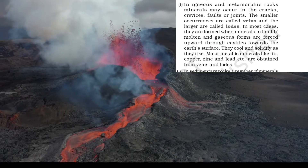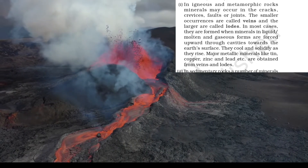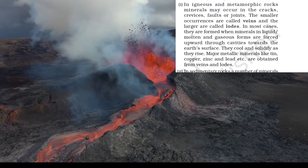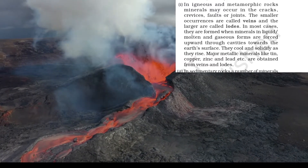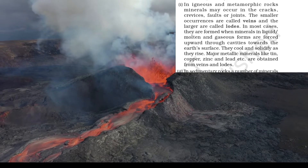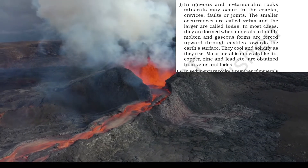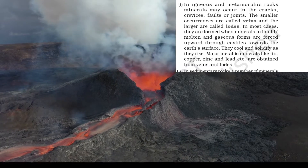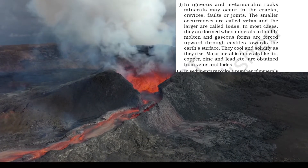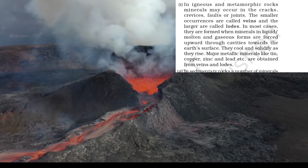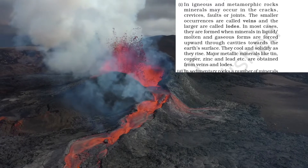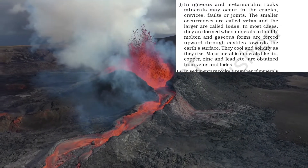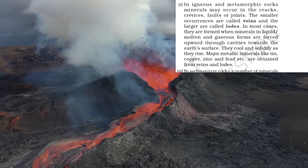Minerals generally occur in these forms. In igneous and metamorphic rocks, minerals may occur in the cracks, crevices, faults or joints. The smaller occurrences are called veins and the larger are called lodes. In most cases they are formed when minerals in liquid, molten and gaseous forms are forced upward through cavities towards the earth's surface. They cool and solidify as they rise. Major metallic minerals like tin, copper, zinc and lead are obtained from veins and lodes.